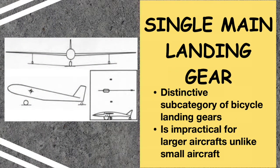Next is the single main landing gear, a distinctive subcategory of the bicycle landing gear. This configuration features a single wide landing gear unit along the centerline, with a much smaller auxiliary tail wheel. Outriggers are again provided for stability. This design is especially straightforward, lightweight, and low-drag, and may involve skids rather than wheels. This simplicity makes it desirable for light planes such as gliders and sailplanes, but for larger aircraft the single main gear is usually impractical.